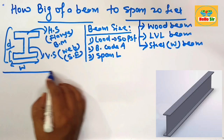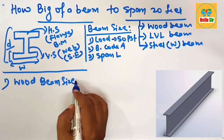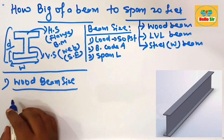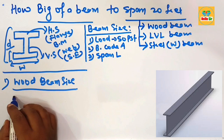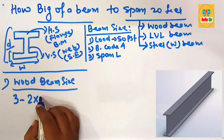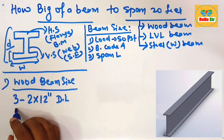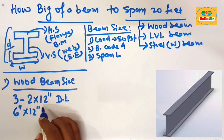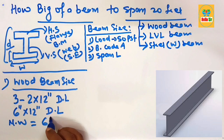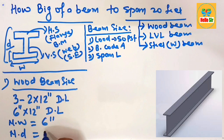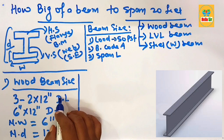First, the wood beam size. For a 20-foot span, you can use three ply of 2×12 dimensional lumber, also written as 6 inches by 12 inches. The nominal width of the beam is about 6 inches and the nominal depth is about 12 inches. So you can use three ply of 2×12 inch dimensional lumber as the wood beam to span 20 feet.